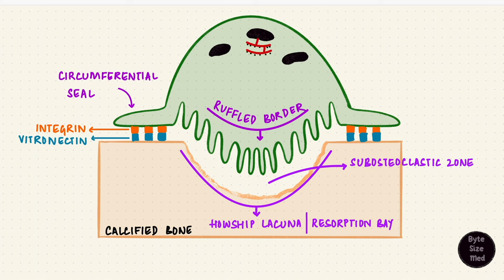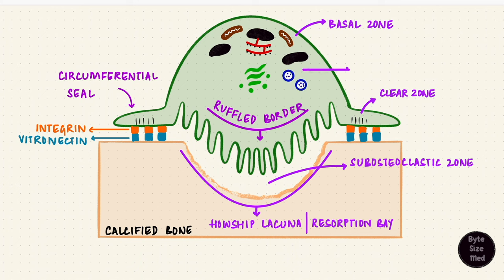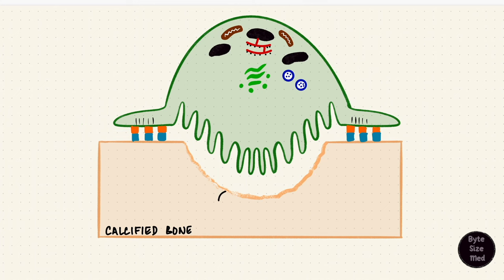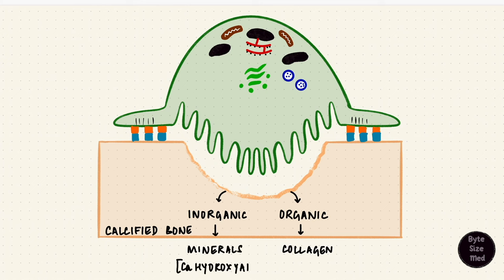It's got lots of nuclei and other organelles in the basal zone. It has a clear zone with actin filaments on the sides of the ruffled border and a vesicular zone with lysosomes and vesicles with enzymes meant to digest bone. Remember that bone matrix is organic and inorganic. The organic part has proteins like collagen fibers and the inorganic part has minerals like calcium hydroxyapatite.